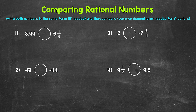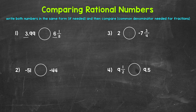Let's jump into our examples, starting with number one, where we have three and 99 hundredths versus six and one-eighth. Here we have a decimal and a fraction, but we're able to compare without changing anything — we can just look at the whole numbers. Six is always greater than three, regardless of any decimal or fraction that follows. So reading this comparison from left to right, three and 99 hundredths is less than six and one-eighth.